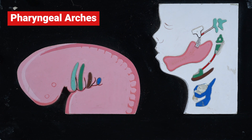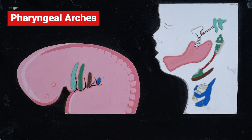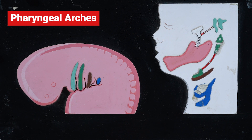The artery of the sixth arch is very peculiar. The distal part of the right sixth arch artery disappears, while the proximal part forms the right pulmonary artery. The distal part of the left sixth aortic arch artery persists as the ductus arteriosus, and the proximal part persists as the left pulmonary artery. The ductus arteriosus is one of the shunts seen in fetal circulation, connecting the left pulmonary artery with the arch of the aorta.